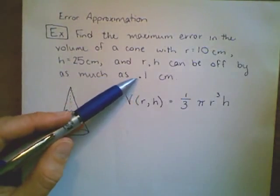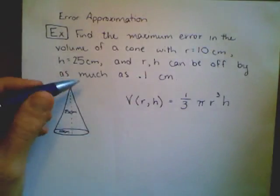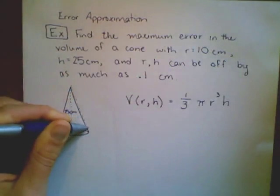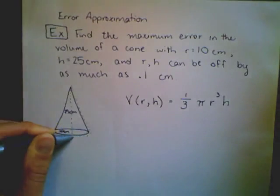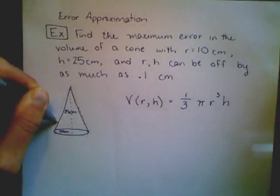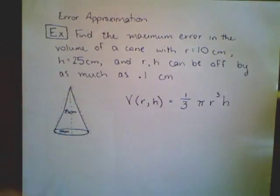and both the radius and height could be off by as much as 0.1 centimeters. It's not good enough to say it'll be off by 0.1 plus 0.1, which is 0.2, because each dimension affects the volume in a nonlinear relationship. It's not scaled linearly as it expands or collapses beyond these boundaries.